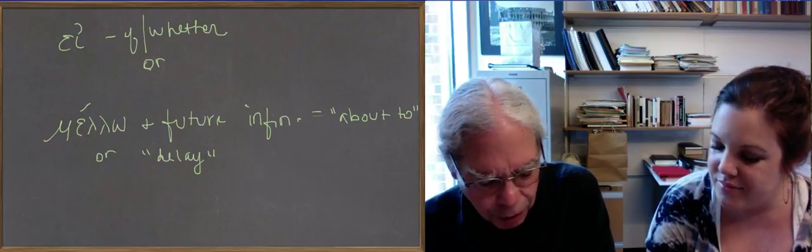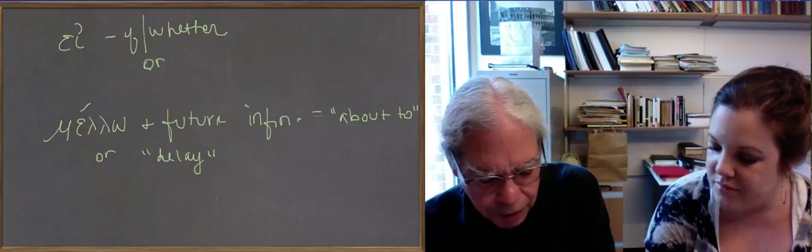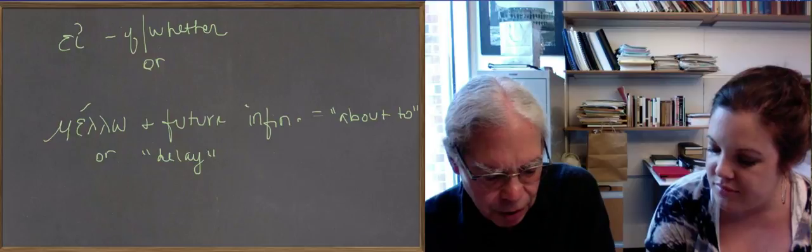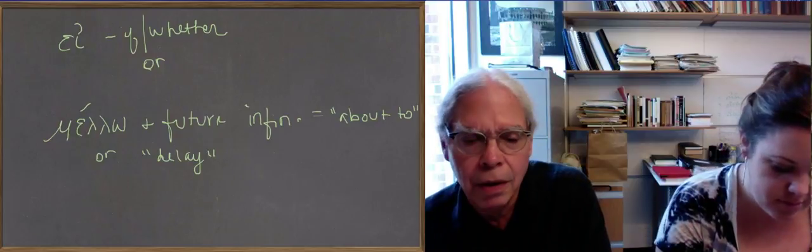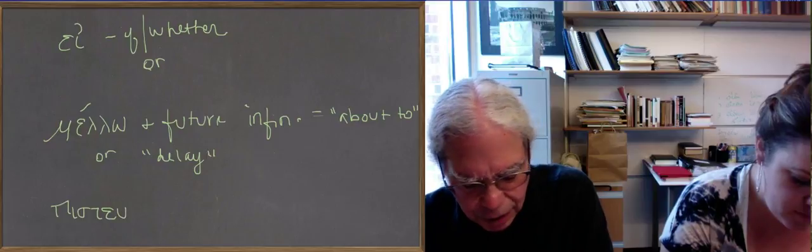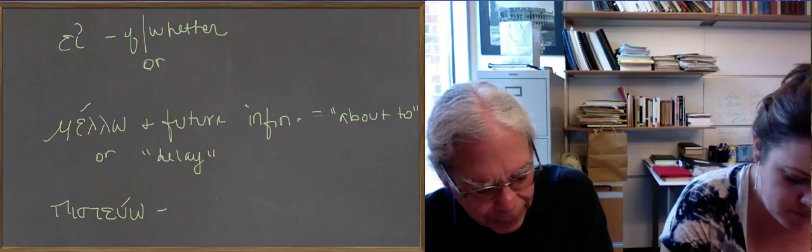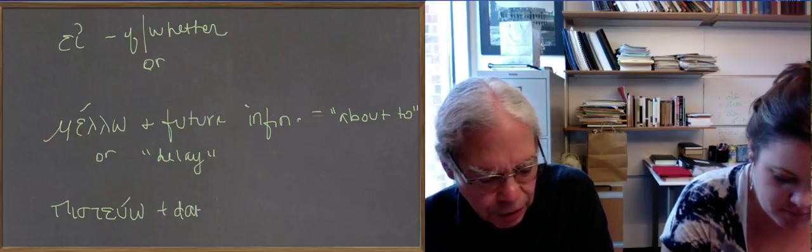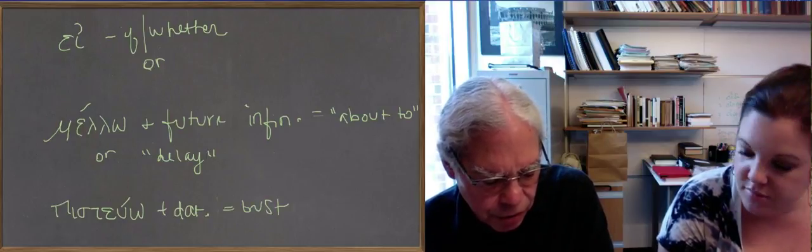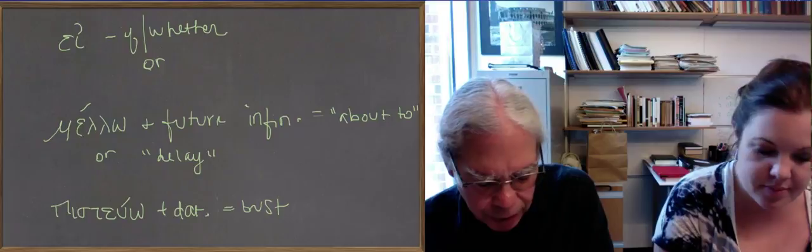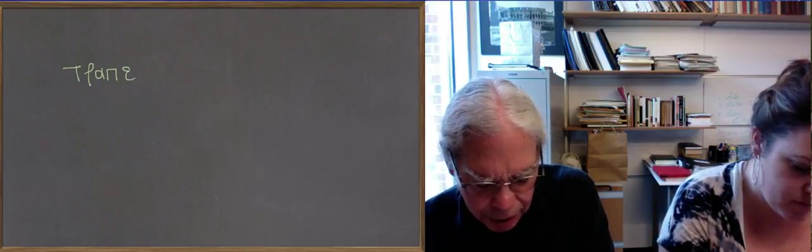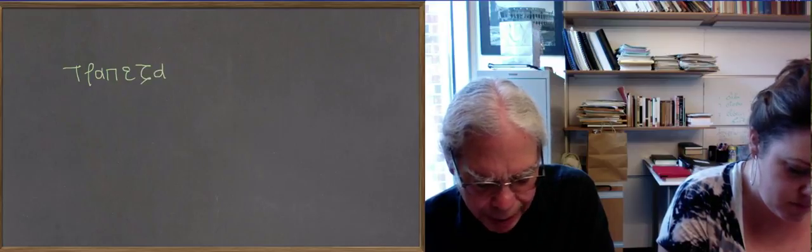Pisteo, another eo verb like paideo, not difficult principal parts. That means to trust and takes a dative, an object in a dative. If you trust someone, that someone goes in the dative case, not in the accusative. Then there's the noun trapeza, genitive trapezes, so it's a thalata type noun, feminine noun of the first declension. And it means two things, a table and a money changer's table or a bank.